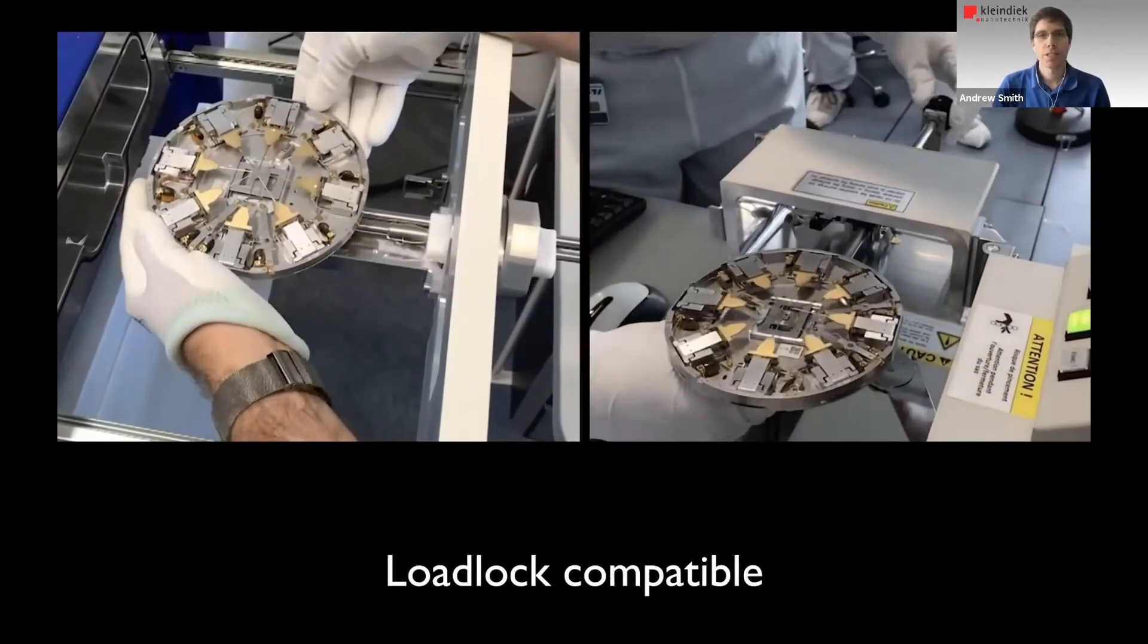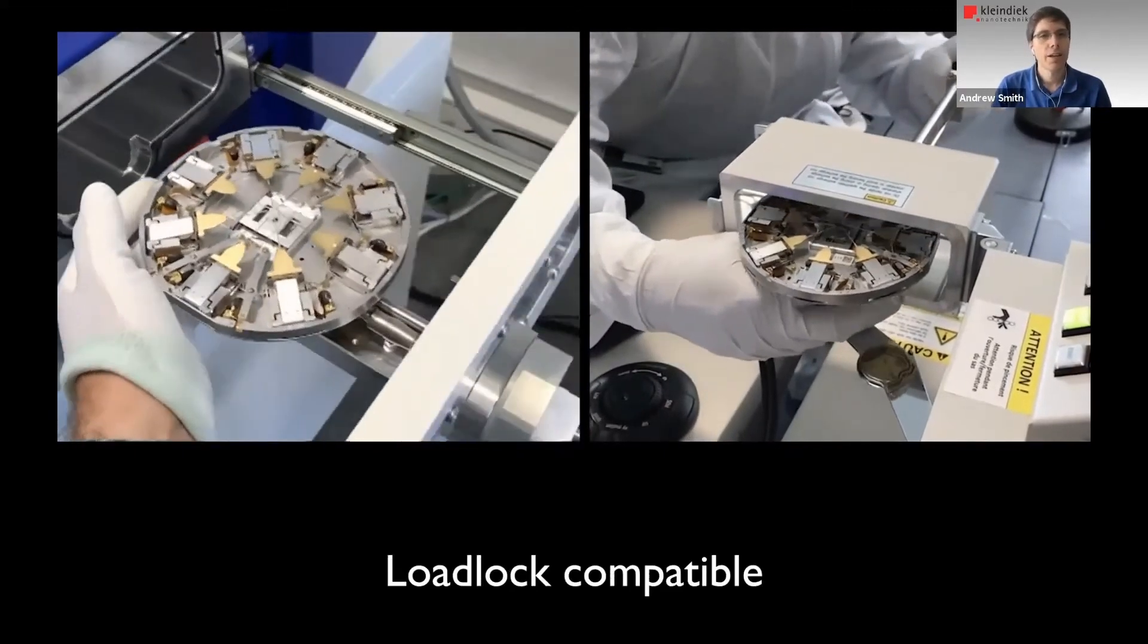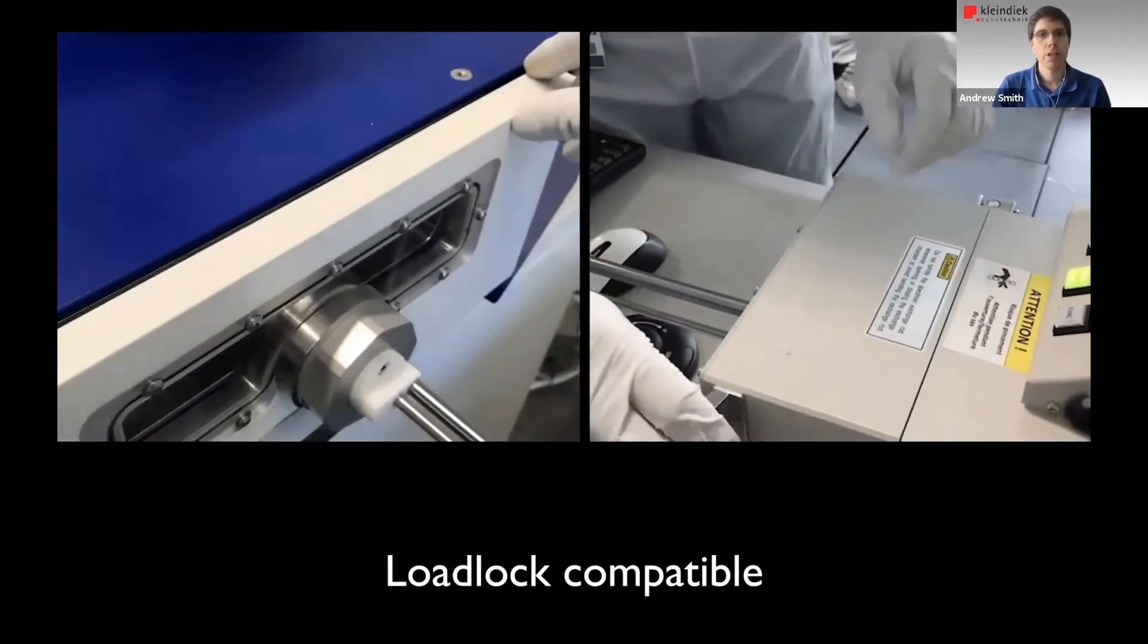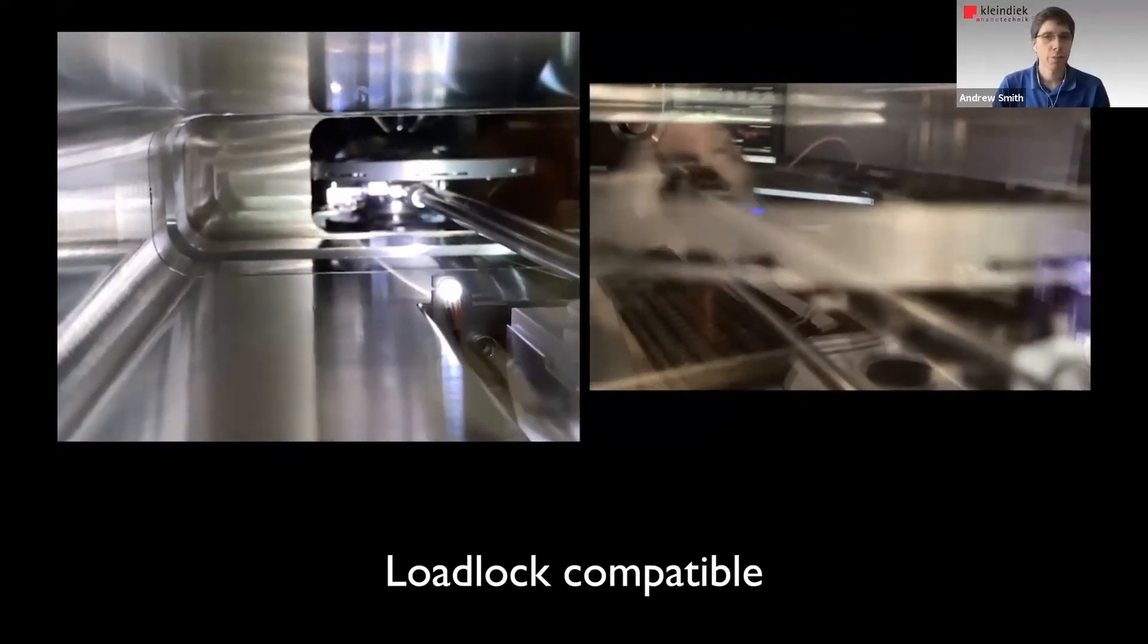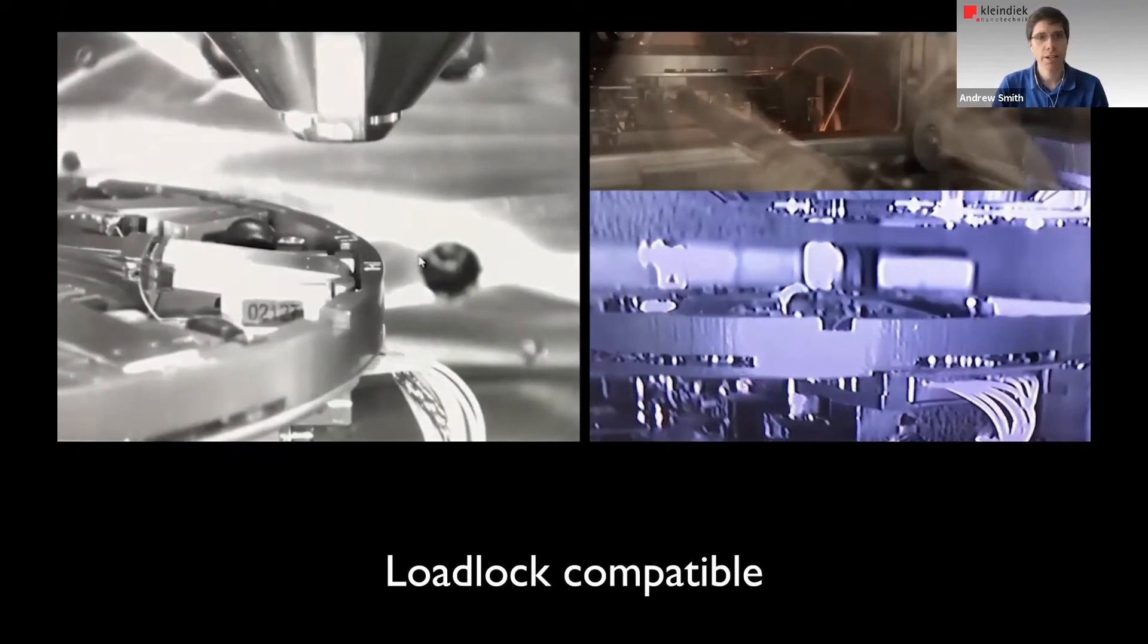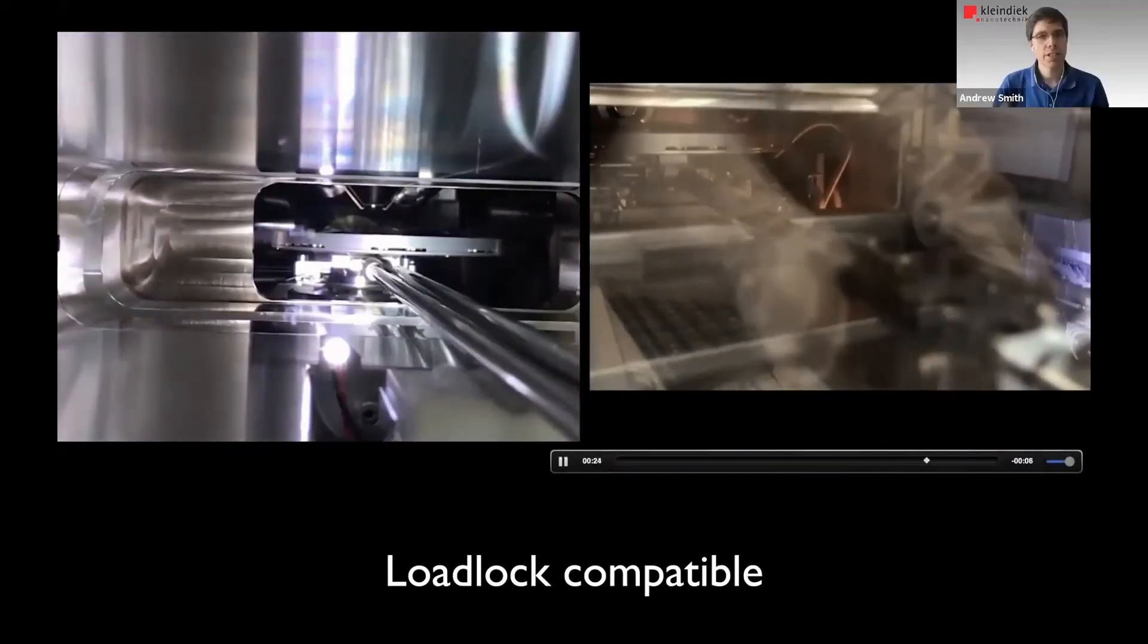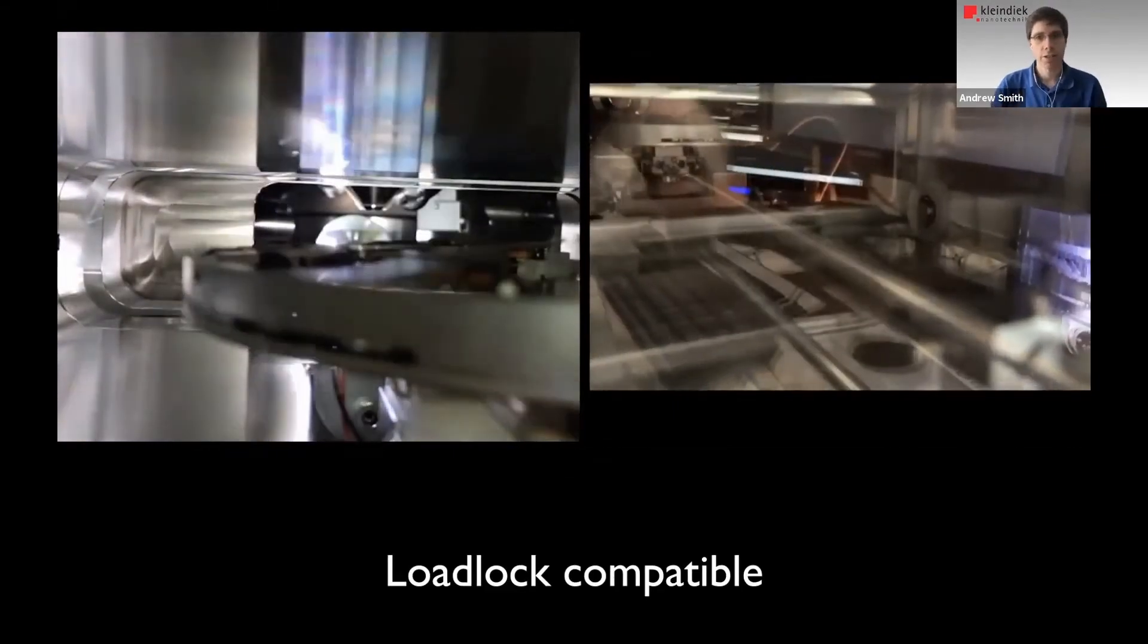Here's two videos. I hope you can see them fluidly of the Prober Shuttle being introduced into the chambers. On the left, we have a Zeiss system. On the right, we have a Hitachi system. But it can be any microscope in principle that has a sufficiently sized load lock. And on the stage, you can see here, there's a connector that allows the signals, the field drives, but also the measurement signals to be transferred to the outside of the chamber.